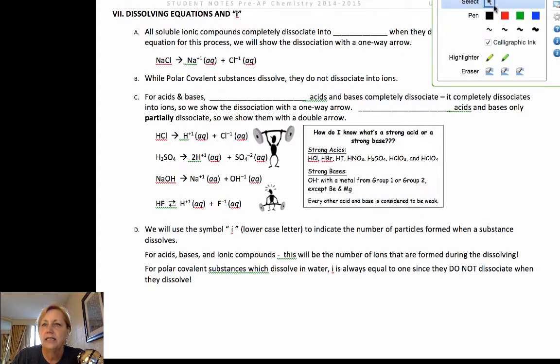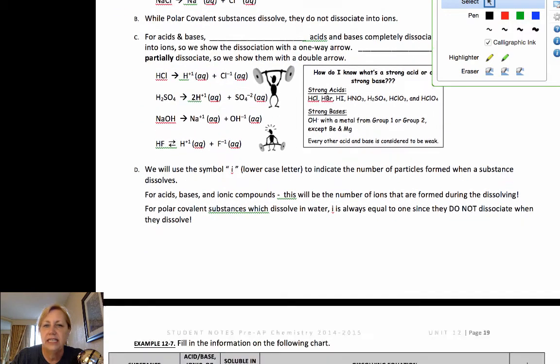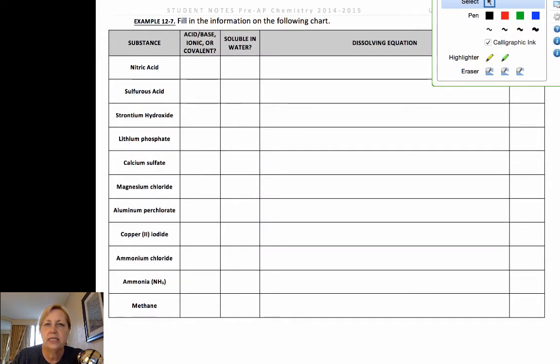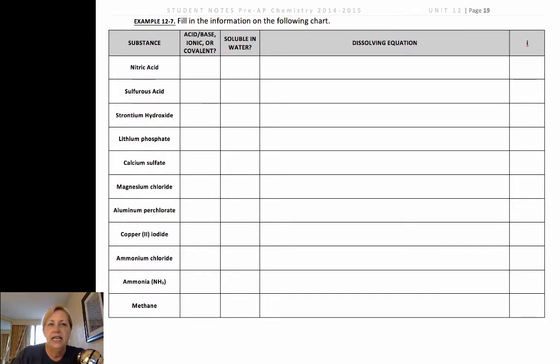Let's look at how we write these equations. You have a chart in your notes. We're going to write some of these. I don't know if I'll do every single one but we will write quite a few. One of the things you want to be able to do is classify, classify, classify. Nitric acid is kind of clear, it's an acid. Acids by definition are soluble in water, so we would write the dissolving equation.